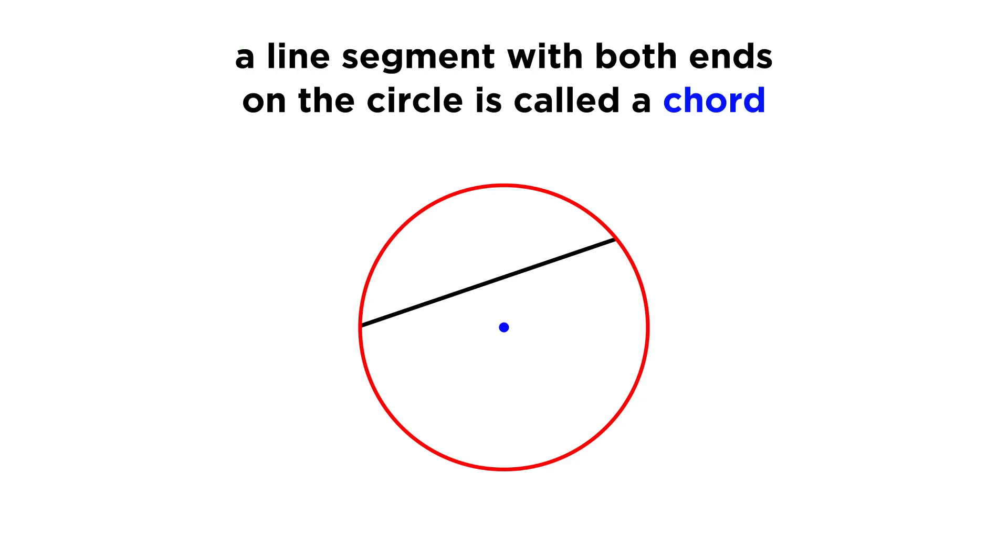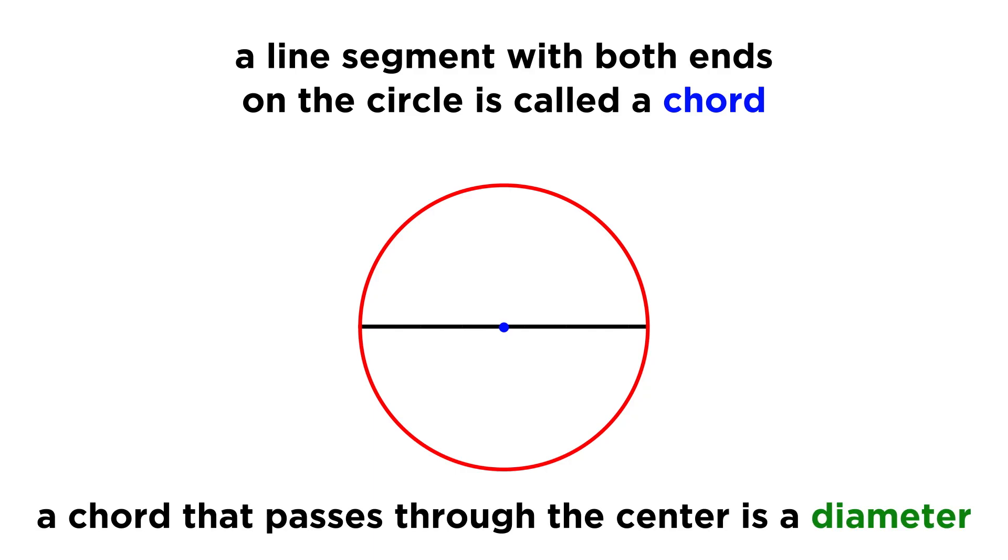Other line segments of note include chords, which are line segments with both endpoints on the circle. A chord that passes through the center of the circle is called a diameter, and we will note that the length of any diameter of a circle is always exactly twice the length of its radius.